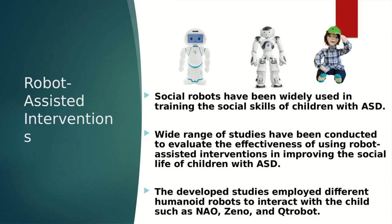Children with ASD feel more comfortable around robots than humans. Social robots have proven to be beneficial for this group because they offer consistent interaction, they are predictable, and this is precisely the sort of interaction that children with ASD prefer. A wide range of studies have been conducted to evaluate the effectiveness of robot-assisted interventions in enhancing the social skills of children with ASD. These studies employed different humanoid robots such as QT robots, NAO, and DENU.